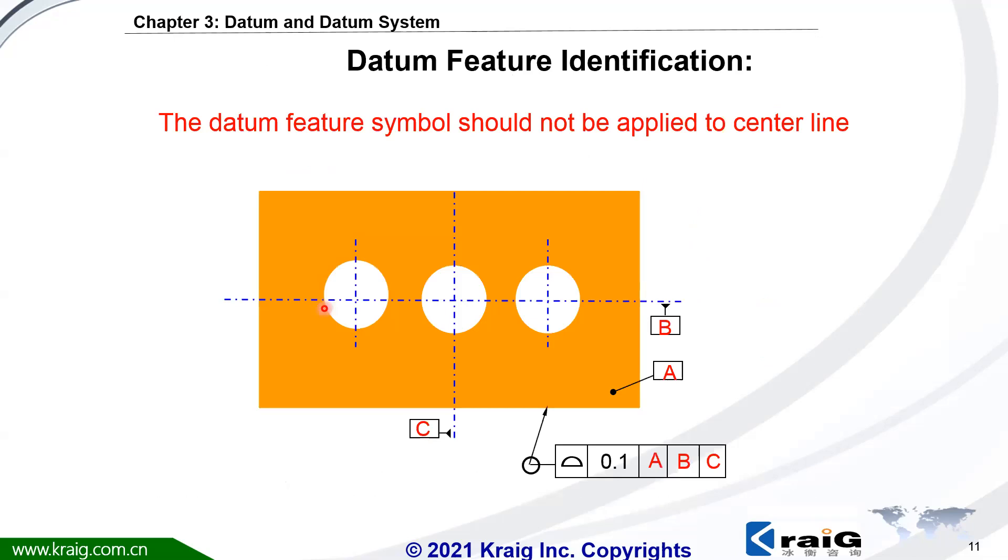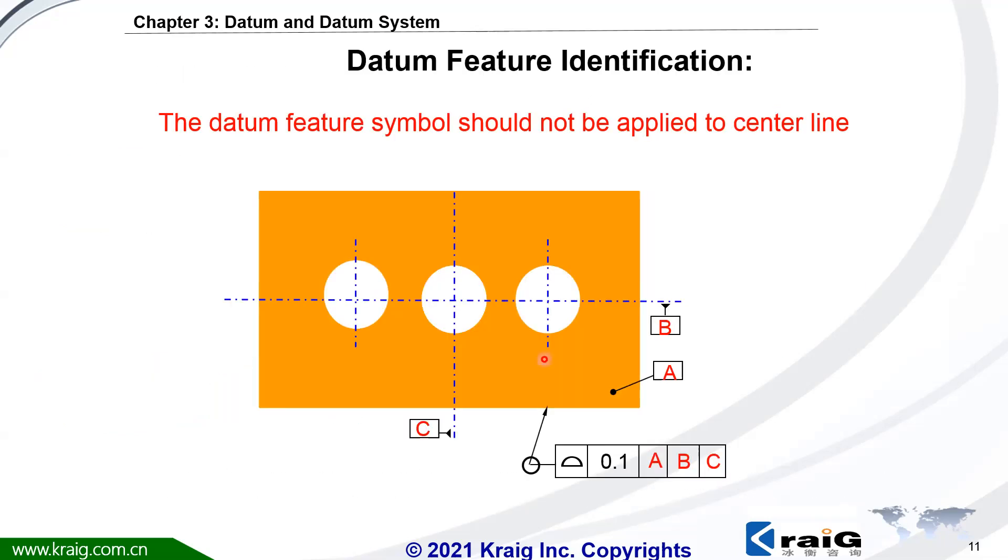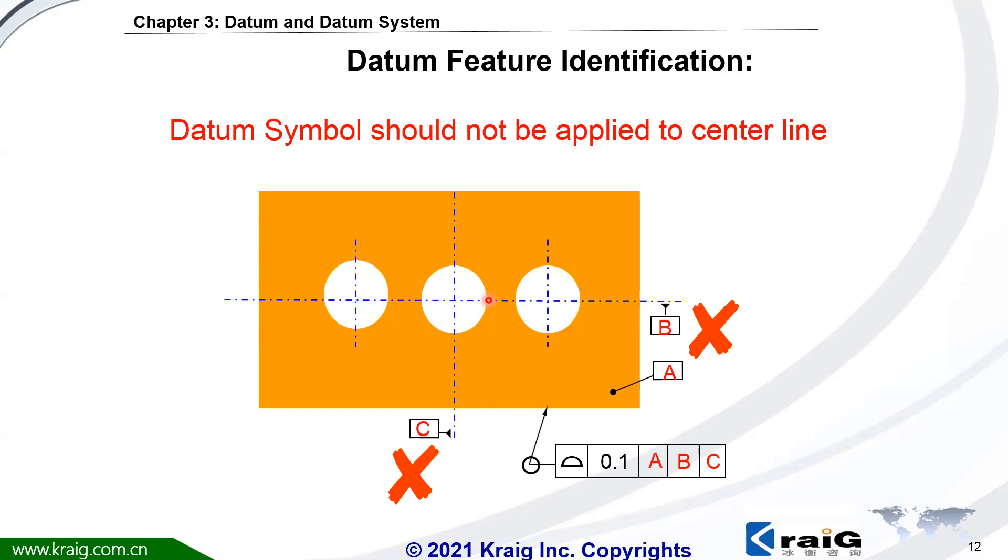Datum symbol should never be applied to the center line or axis, especially when there's multiple ways to establish this center line. Here, this datum B is the center line. How could we get this center line from actual parts? There's multiple ways. First, we could use these two holes to get datum B, or we could use these two holes to get datum B. And we don't know which way is correct. From the drawing, we don't know where this center line comes from. This is why we shouldn't use this method to specify the datum.